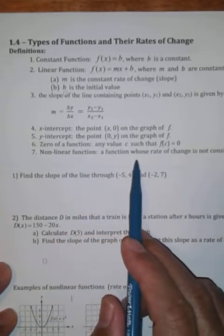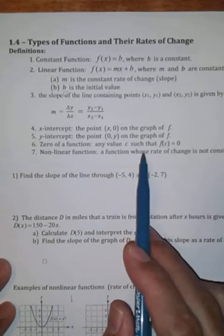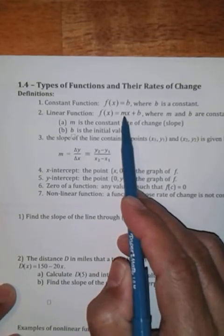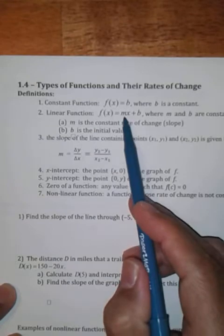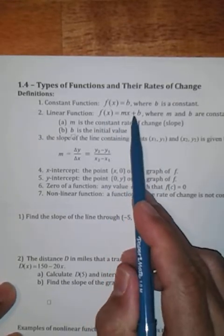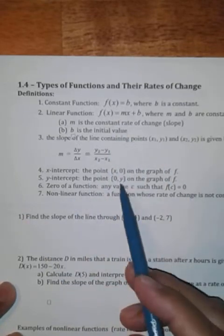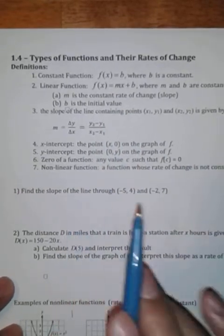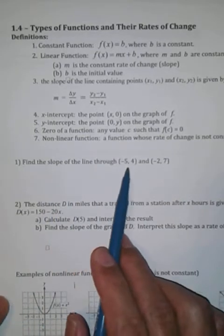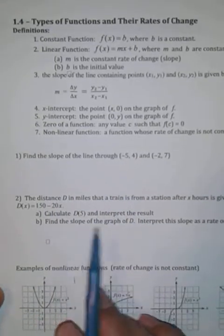A non-linear function is a function whose rate of change is not constant. That means it doesn't have a slope that stays the same, so it cannot be written as f(x) = mx + b, because m and b are constants — the same number. Number one asks to find the slope of a line through two points; we'll do that in class, and most of you can work it out before then.